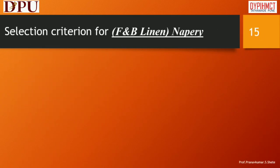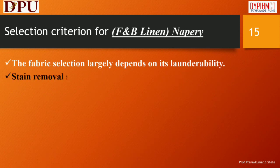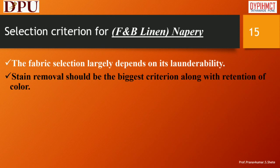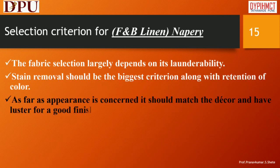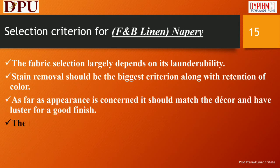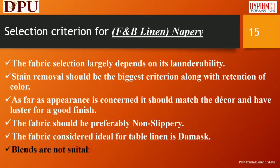Selection criterion for F&B linen — Napery: The fabric selection largely depends on its launderability. Stain removal should be the biggest criterion along with retention of color. As far as appearance is concerned, it should match the decor and have luster for a good finish. The fabric should be preferably non-slippery. The fabric considered ideal for table linen is damask. Blends are not suitable as the linen cannot be starched for a crisp effect.